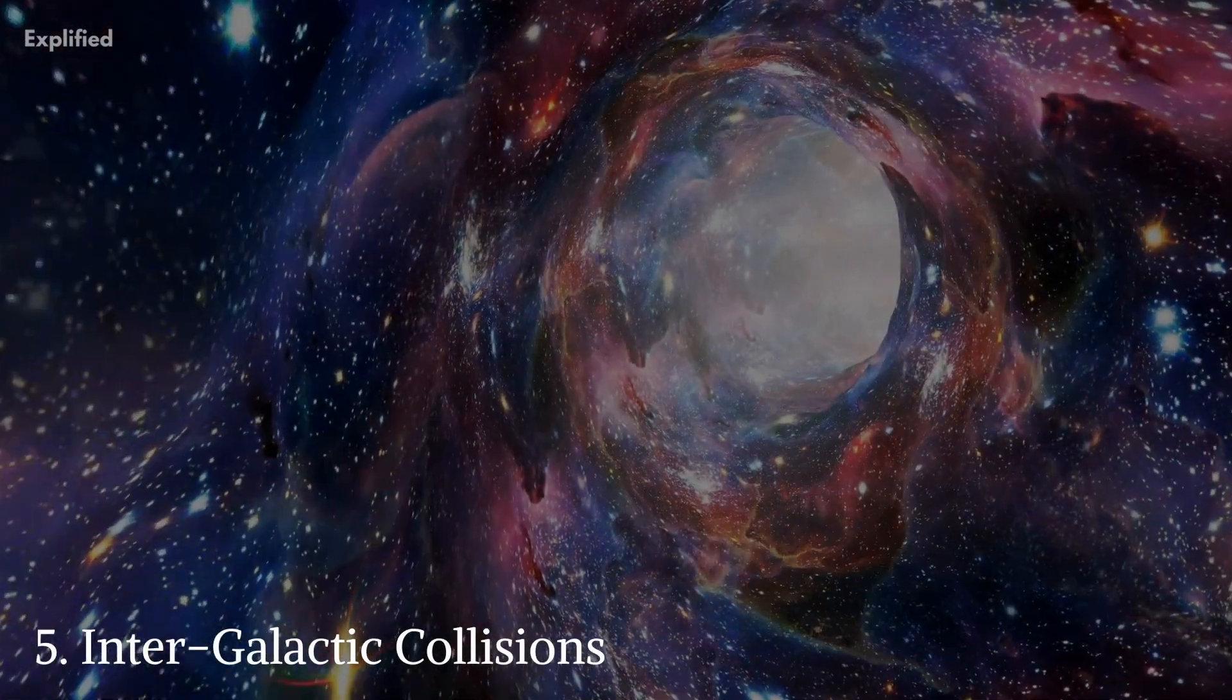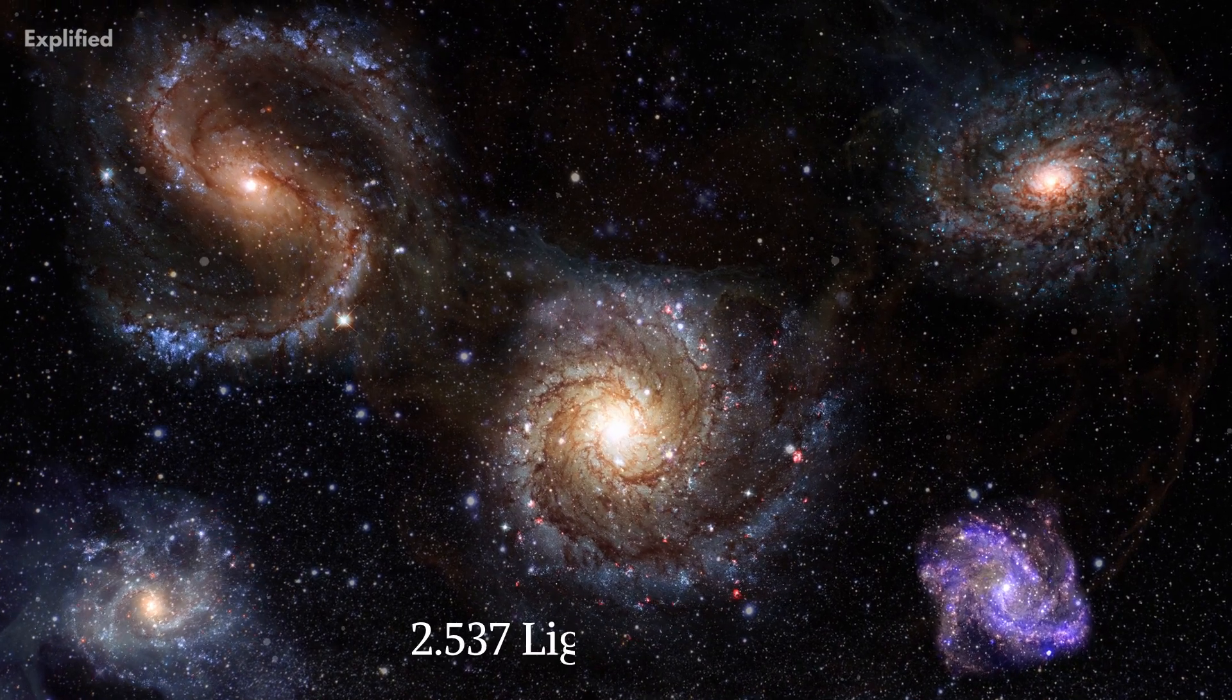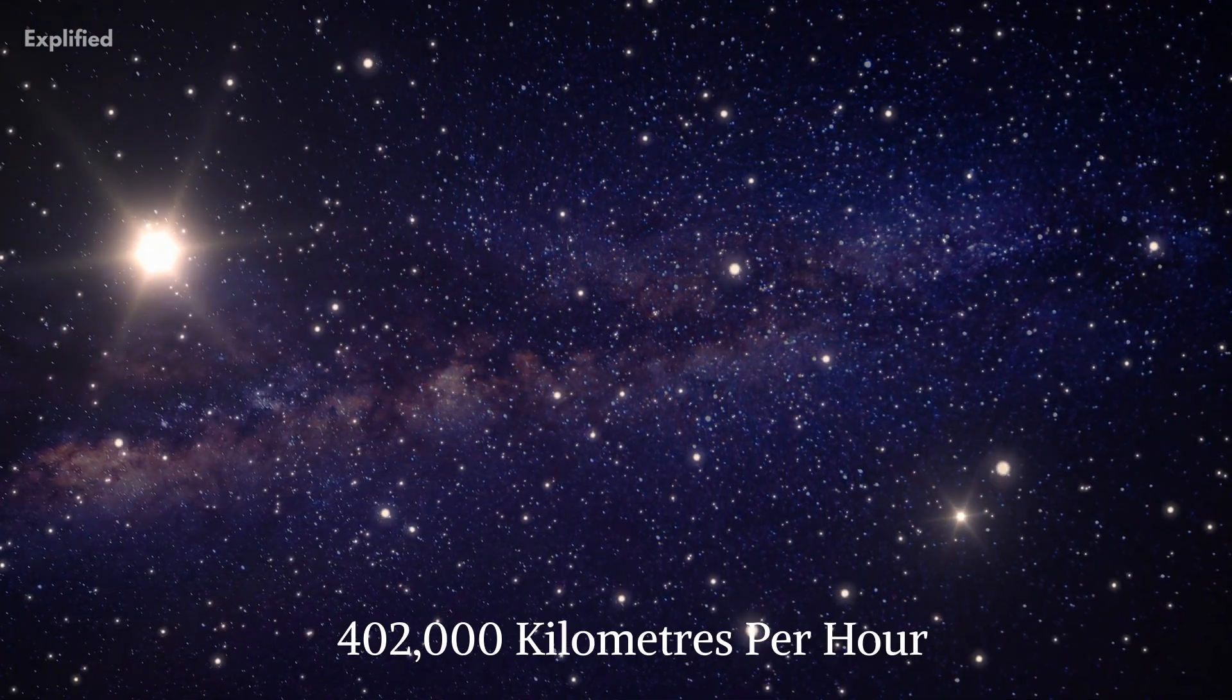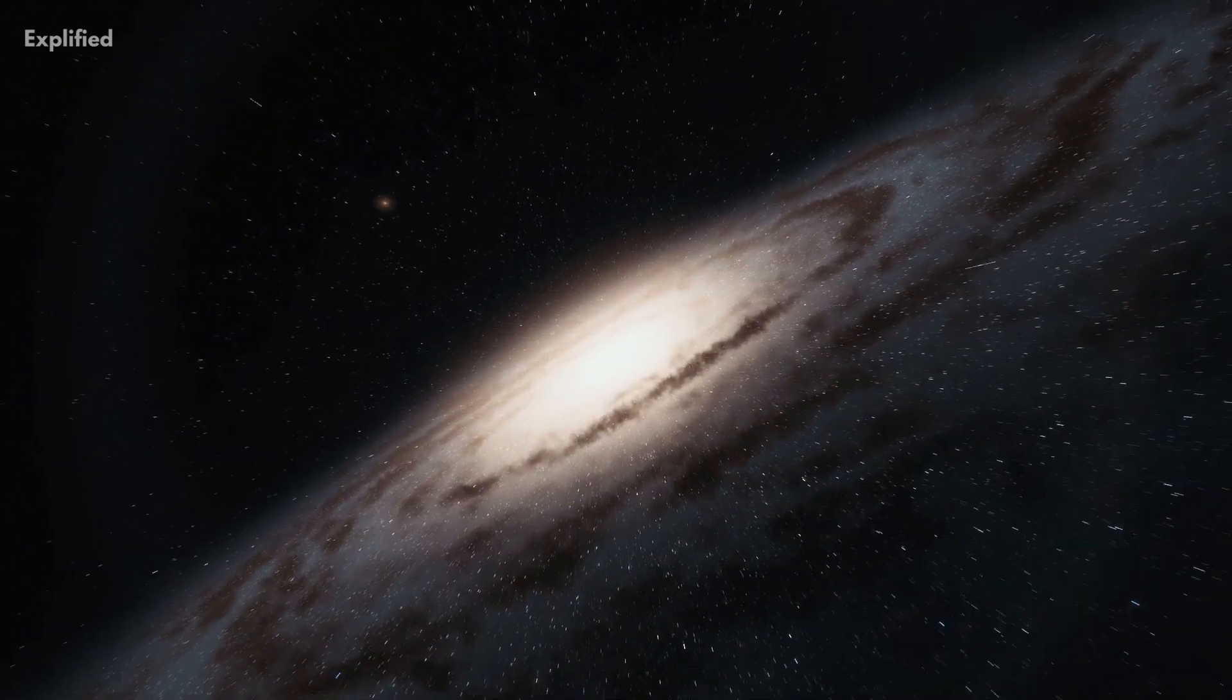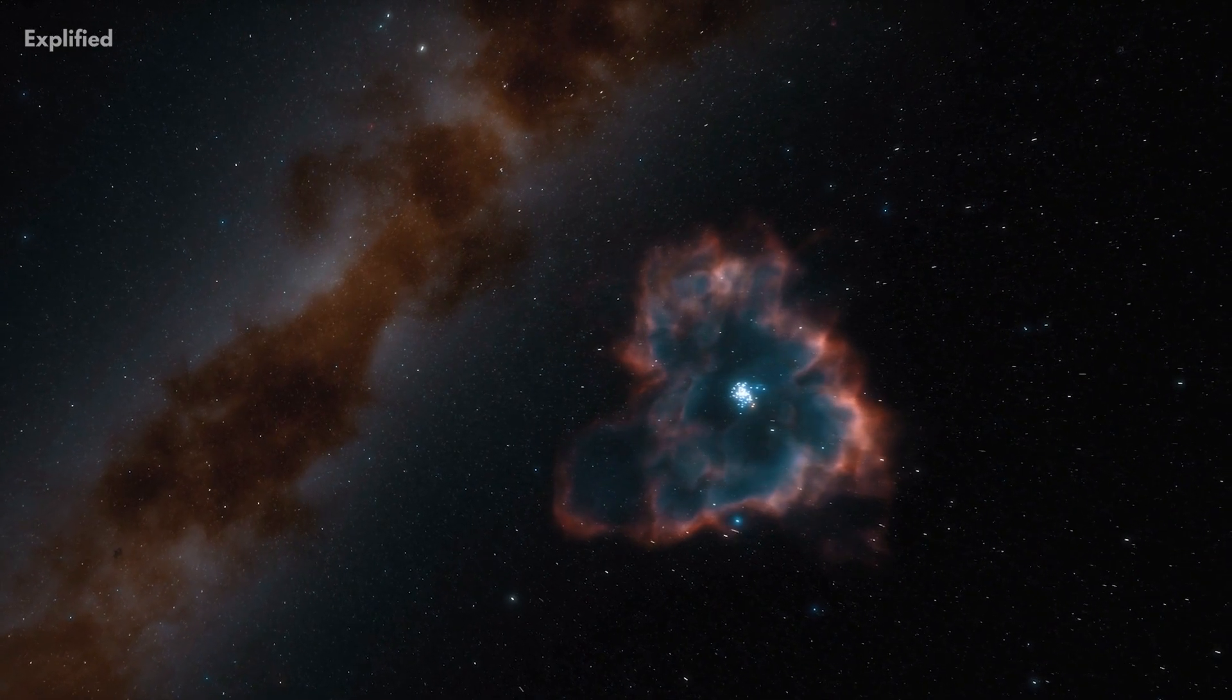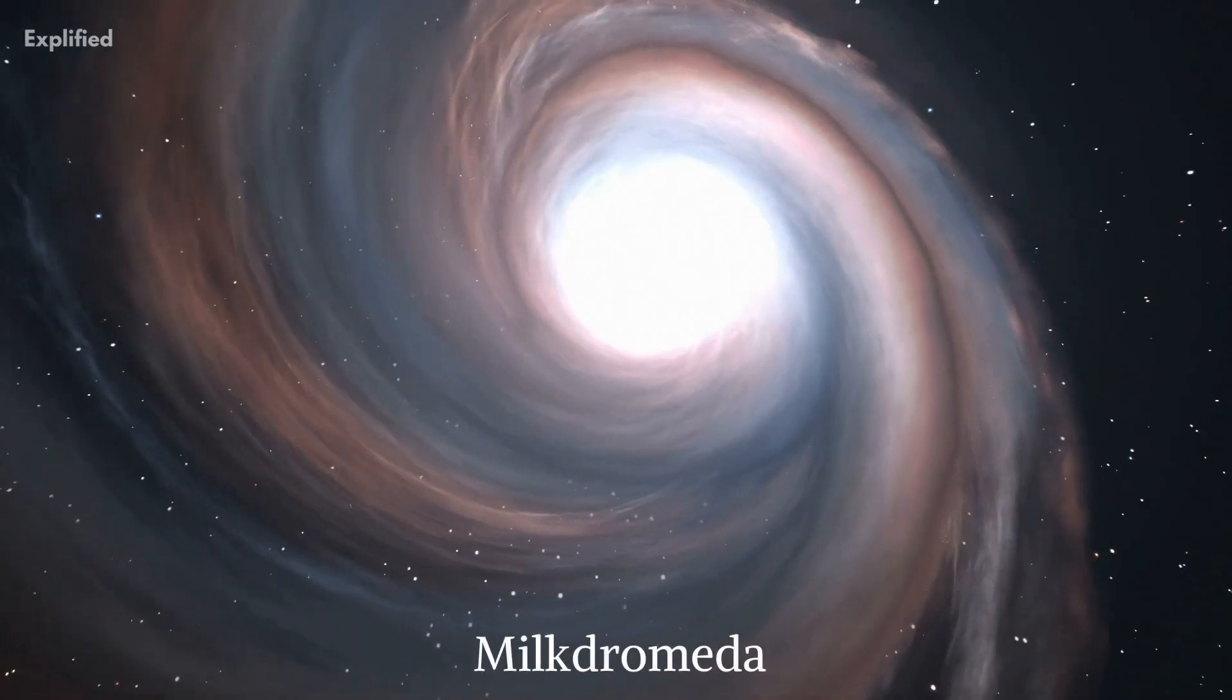Intergalactic collisions. Our galaxy, the Milky Way, and a nearby galaxy called Andromeda, which is about 2.537 million light years away, are currently racing through space toward one another at a speed of 402,000 kilometers per hour. Both Andromeda and Milky Way will collide in the year 3.75 billion at the current rate of speed. When the two galaxies collide in 4 billion years, a massive galaxy known as Milky Way-Andromeda will be created.